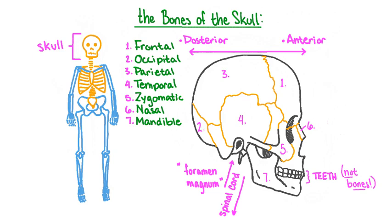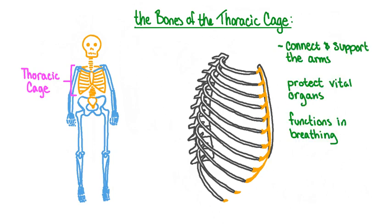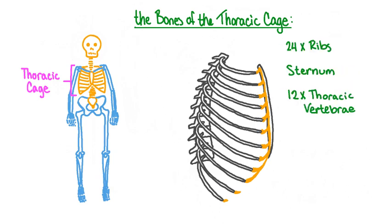Let's take a look at the bones of the thoracic cage, also commonly called the rib cage. The thoracic cage serves several different functions: it connects and supports the bones and muscles of the arms and upper body, surrounds and protects the delicate tissue of the lungs and the heart as well as other vital organs like the liver and kidneys, and it connects and supports the diaphragm and intercostal muscles, which allow us to breathe. The thoracic cage consists of the bones of the ribs, the sternum, and the thoracic vertebrae.